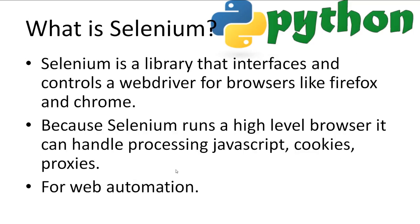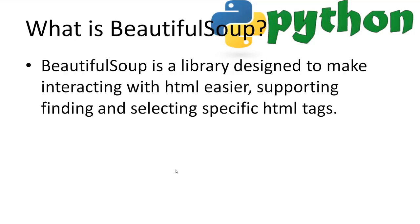So what is Selenium? Selenium is a library that interfaces and controls a web driver for browsers like Firefox and Chrome. Selenium runs on a high-level browser so it can handle processing JavaScript, which makes our job a little slower over a pure HTML site. Its primary use is web automation. What is BeautifulSoup? BeautifulSoup is your go-to library for handling HTML. It supports all sorts of features for finding, selecting, and interacting with HTML tags and information.